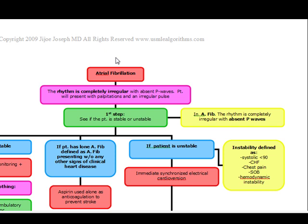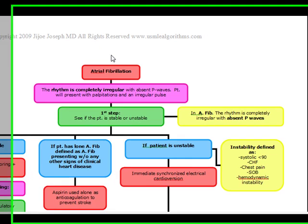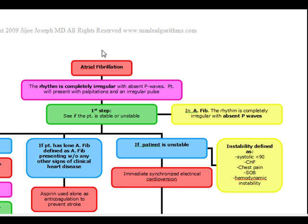The first thing you want to do is see whether it's an arrhythmia or not. You do this by looking at the heart rate — the normal heart rate is 220 minus the age. If the heart rate is extremely high, most probably you're dealing with an arrhythmia. In AFib, we see that the rhythm is completely irregular, we see absent P waves, and the patient comes in with palpitations.